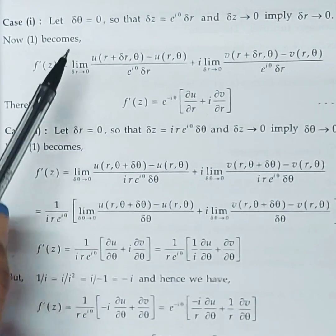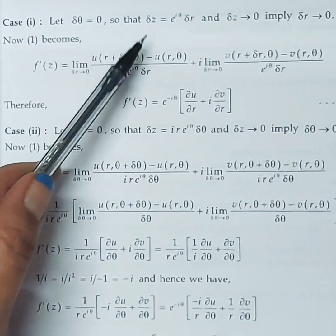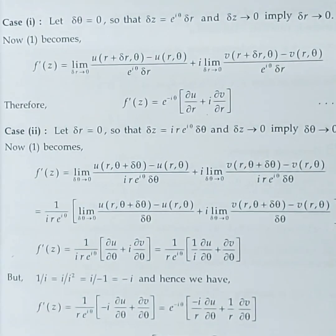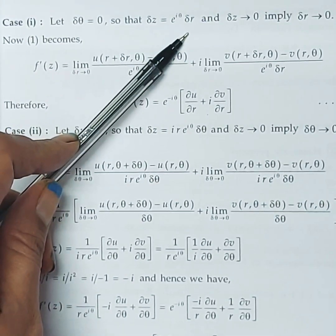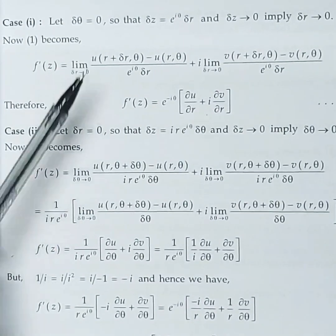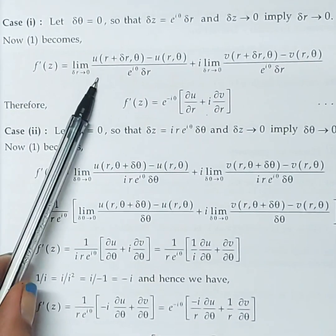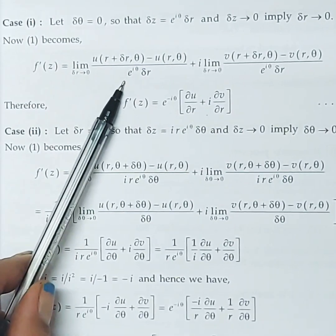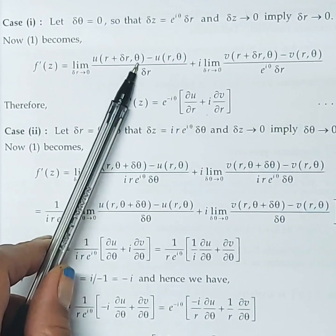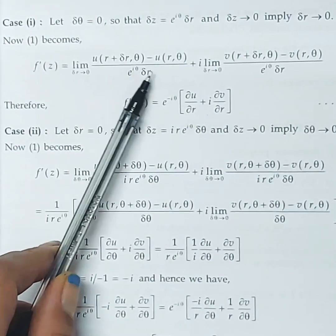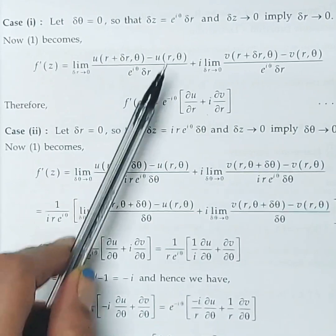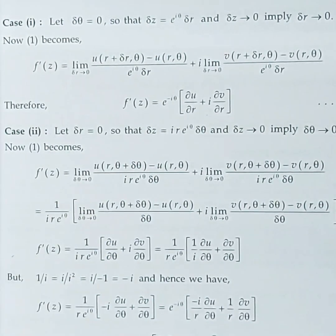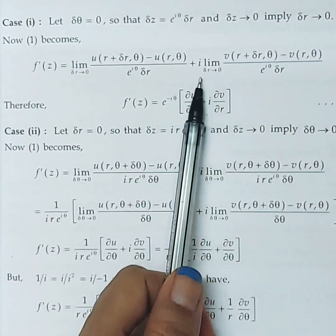Case 1: Δθ = 0. Then Δz = e^{iθ}·Δr, so Δz → 0 implies Δr → 0. Substituting into our expression, we get: lim(Δr→0) [u(r + Δr, θ) − u(r, θ)] / (e^{iθ}·Δr) + i·lim(Δr→0) [v(r + Δr, θ) − v(r, θ)] / (e^{iθ}·Δr).